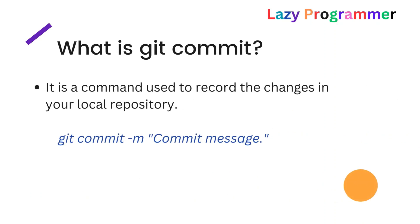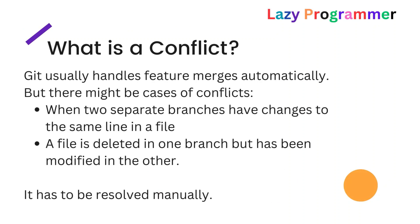The next question is: what is a git commit? When working on a feature locally, you won't make all changes at once — you'll do it in steps or phases. If you want to save your code or create a save point at any intermediate stage, you can use the git commit command. It records whatever changes you have done on your local repository. The syntax is: 'git commit -m' followed by a useful message describing what changes you have done up to that point.